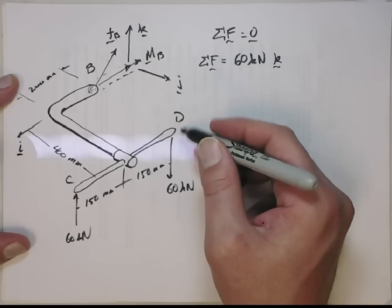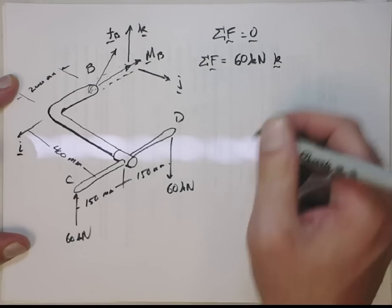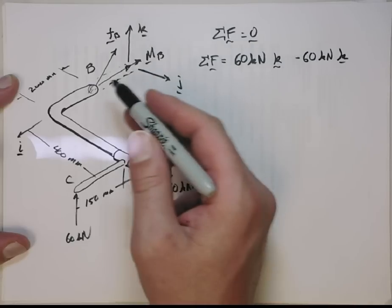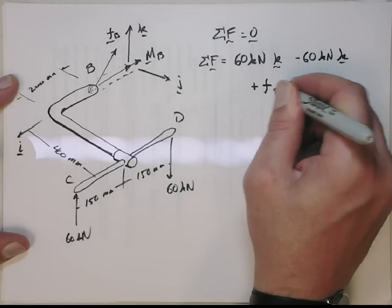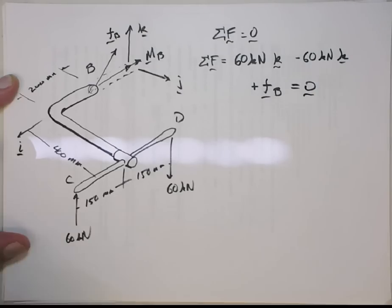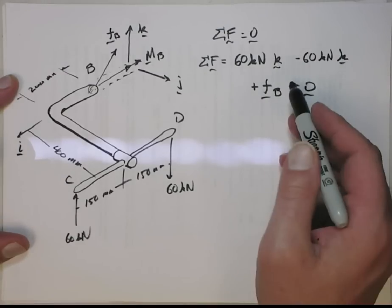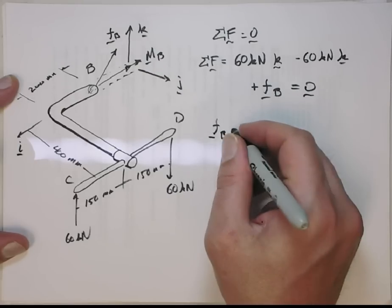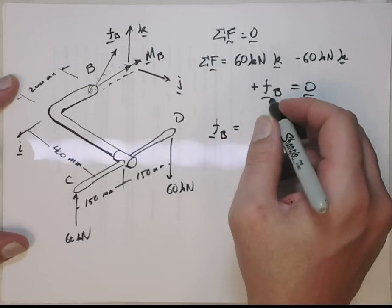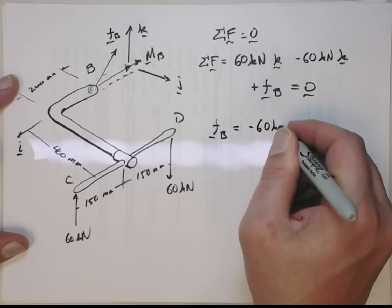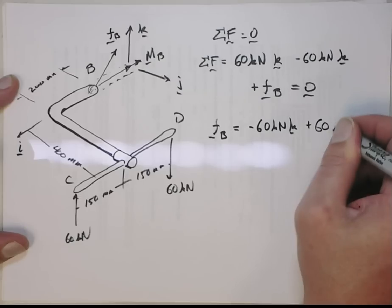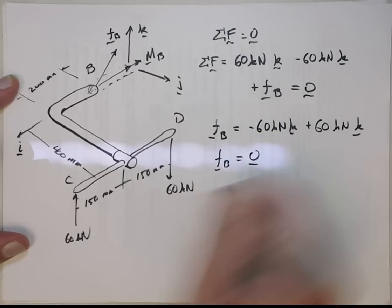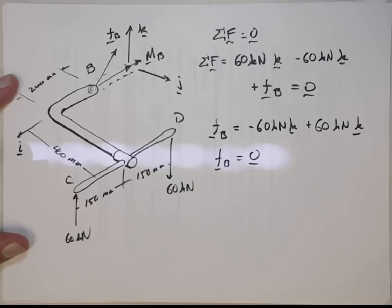At D, we have a force acting downward in the k direction of 60 kN, or a minus 60 kN k force, and then that's balanced by the internal reaction force at B, and all that sums to zero. Alright? So when you look at this, you can immediately see that force B is equal to zero. Because if we juggle this, we get force B is minus 60 kN in the k direction, plus 60 kN in the k direction that cancel out, and then FB equals the zero vector. Okay? So there is no net force at B.